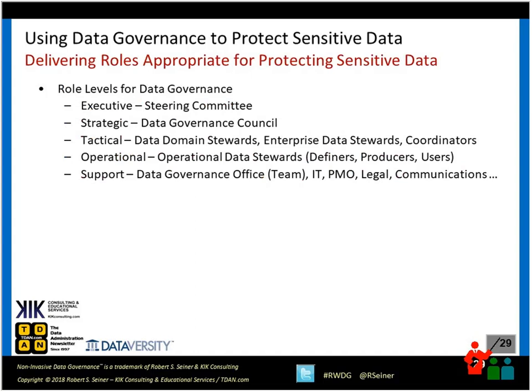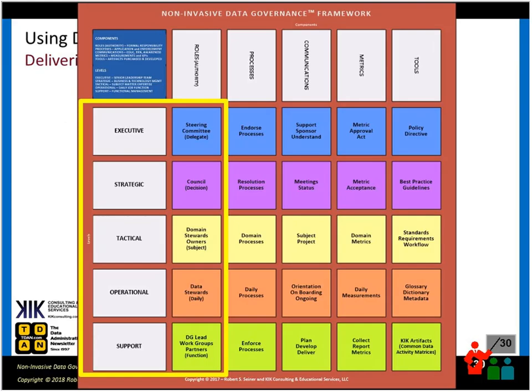The next subject is the different roles associated with data governance and how they play a part in protecting sensitive data. I break roles into five categories: executive, strategic, tactical, operational, and support roles. The roles are so important in the noninvasive data governance framework that I make them the first category I discuss. There are different levels — executive, strategic, tactical, operational — and the roles may be specific to those levels.